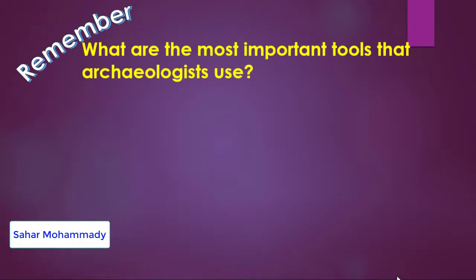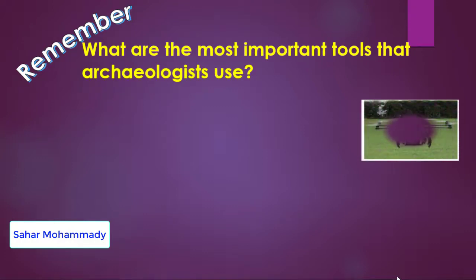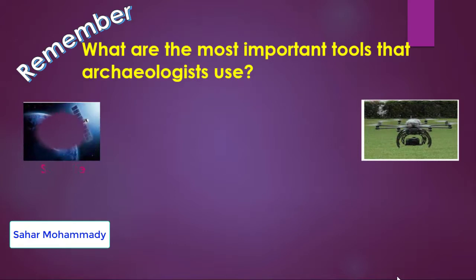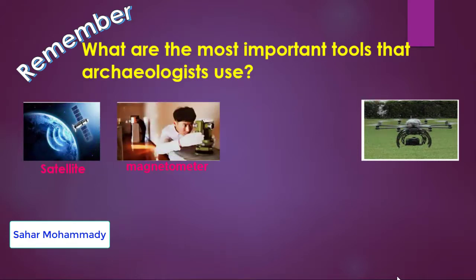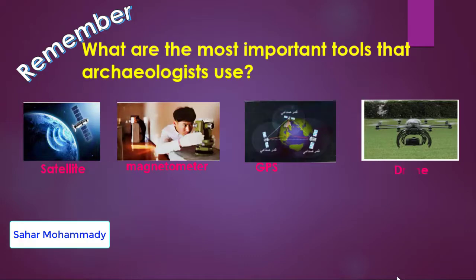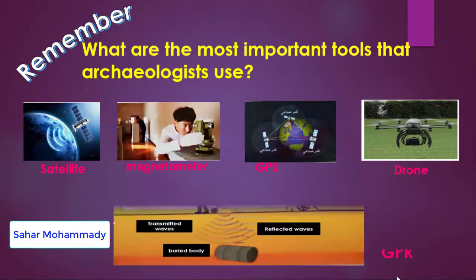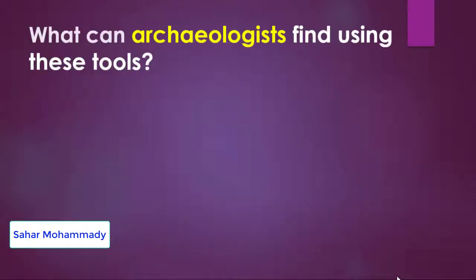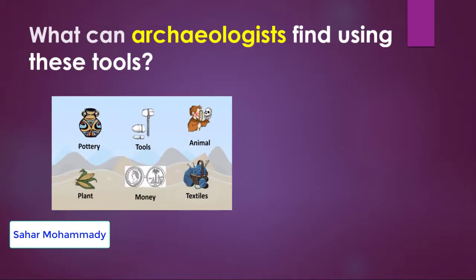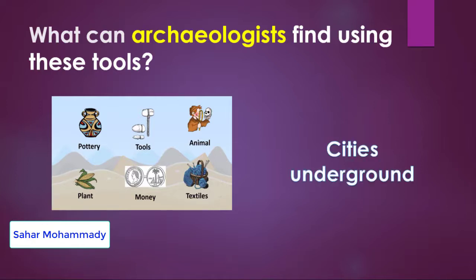Remember the most important tools archaeologists use: satellite, magnetometer, GPS, drone, and GPR. What can archaeologists find using these tools? They can find many things — money, tools, animals, and so on. They can even find whole cities under the ground.